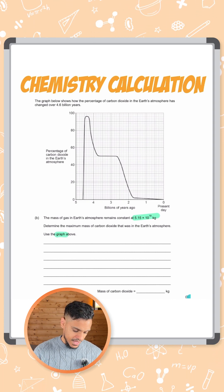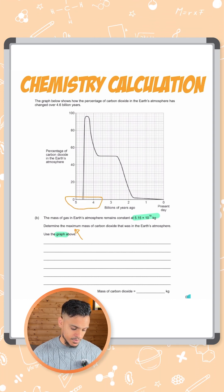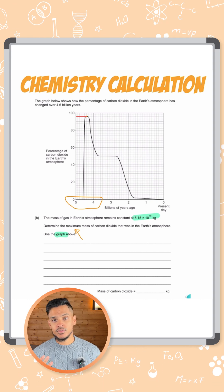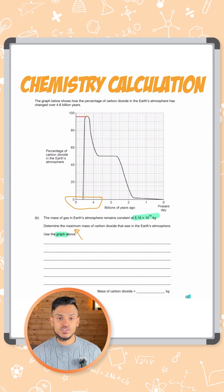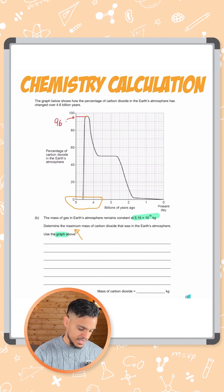The key thing here is that it says the maximum mass in the Earth's early atmosphere. So early atmosphere would be around here somewhere. The maximum mass would be up here. So what we need to do is read the graph off at that point. That's about two boxes down from 100, I would say that's around 96 percent.